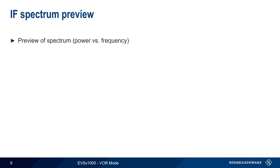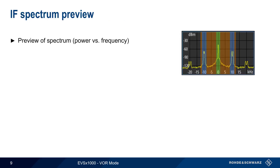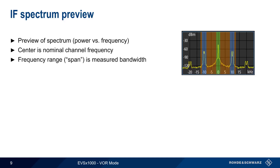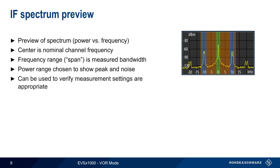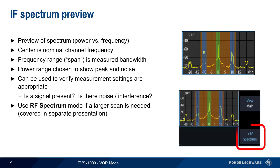The IF Spectrum Preview provides a plot of power versus frequency, similar to a spectrum analyzer display. The center of the display, or zero frequency, is the nominal channel frequency, and the frequency range or span is set to the measurement bandwidth. The EVS chooses a power range that will display both the peak and the noise simultaneously. The main application of the IF Spectrum Preview is verifying that the measurement settings are appropriate — for example, we can use the IF Spectrum to see if a VOR signal is present, or if there is noise or other types of interference in addition to the VOR signal. Although the EVS automatically chooses the frequency range or span based on the NAVAID type, RF Spectrum mode can be used to choose a larger span if needed. This is covered in a separate presentation.